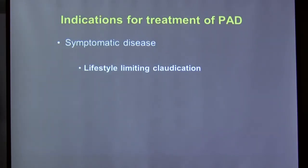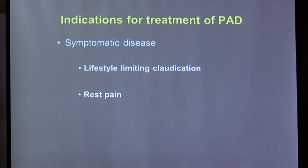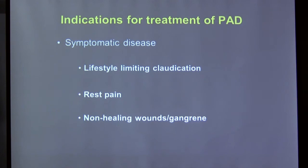Procedural intervention is reserved for symptomatic patients — not just because blockage is present. Indications include lifestyle-limiting claudication (what's limiting depends on the individual — a 70-year-old active person versus a 95-year-old in a nursing home), rest pain, non-healing wounds, ulceration, or gangrene. Asymptomatic disease should be managed medically; once rest pain or tissue loss develops, intervention is clearly indicated.